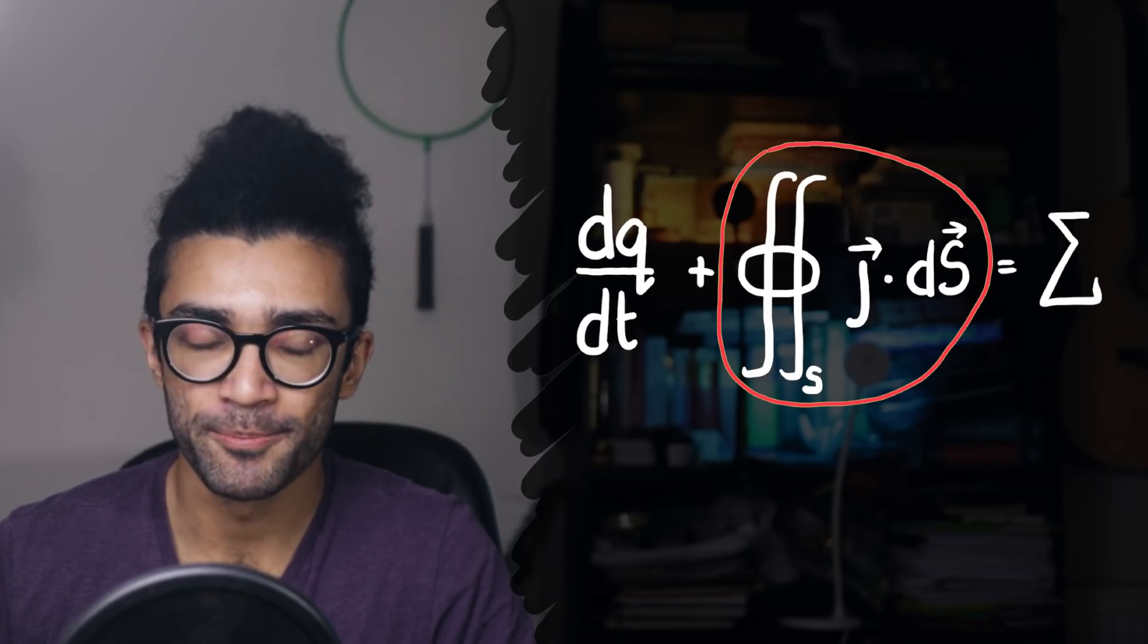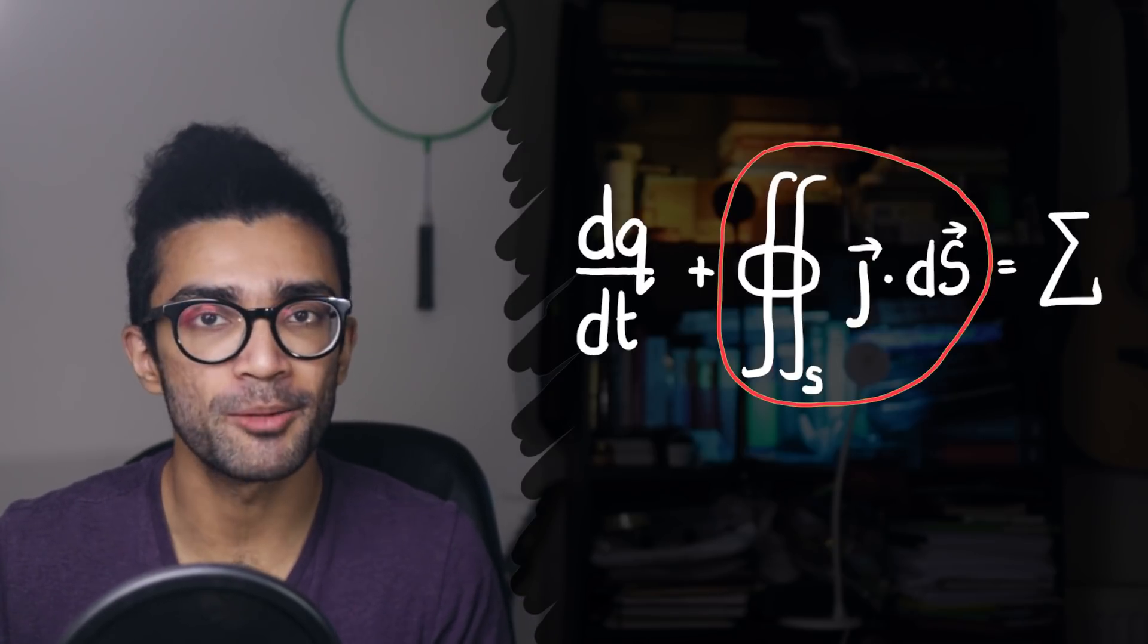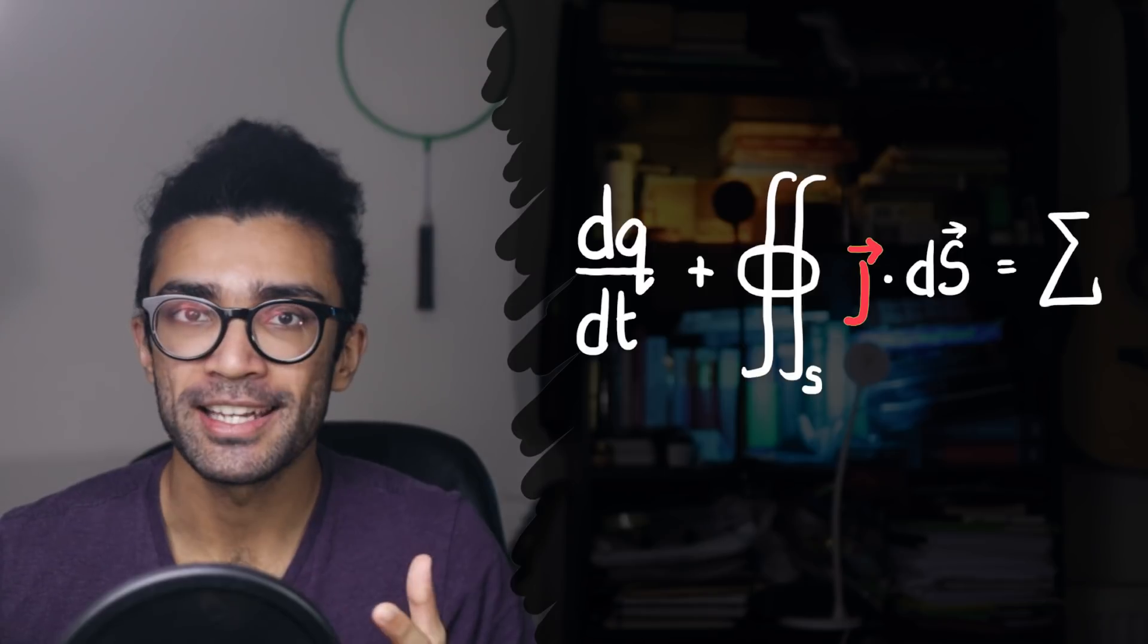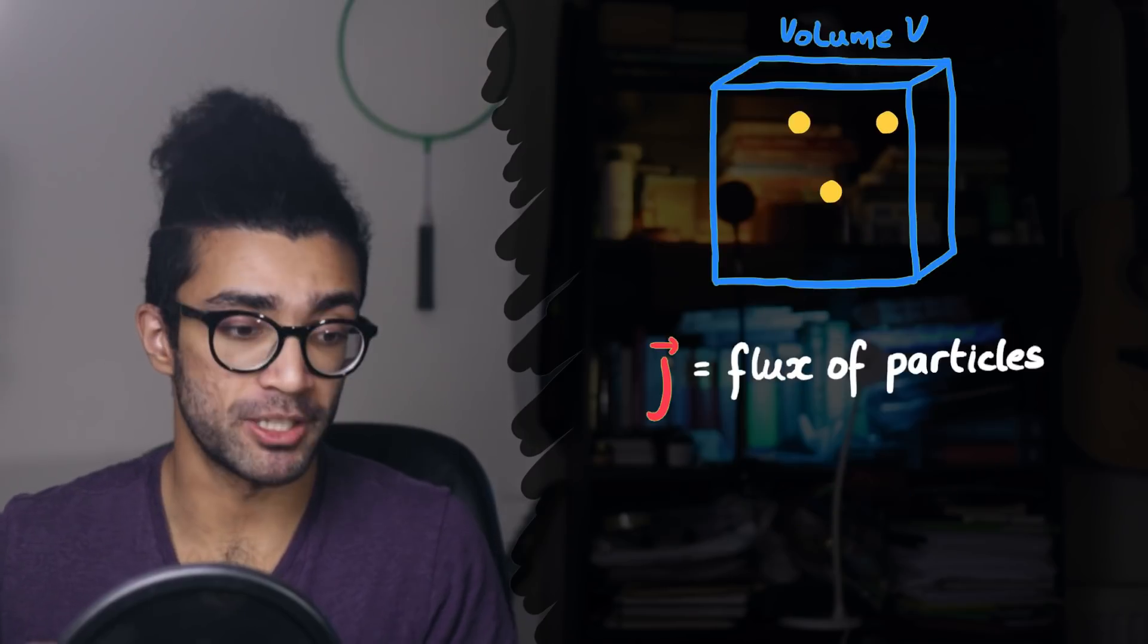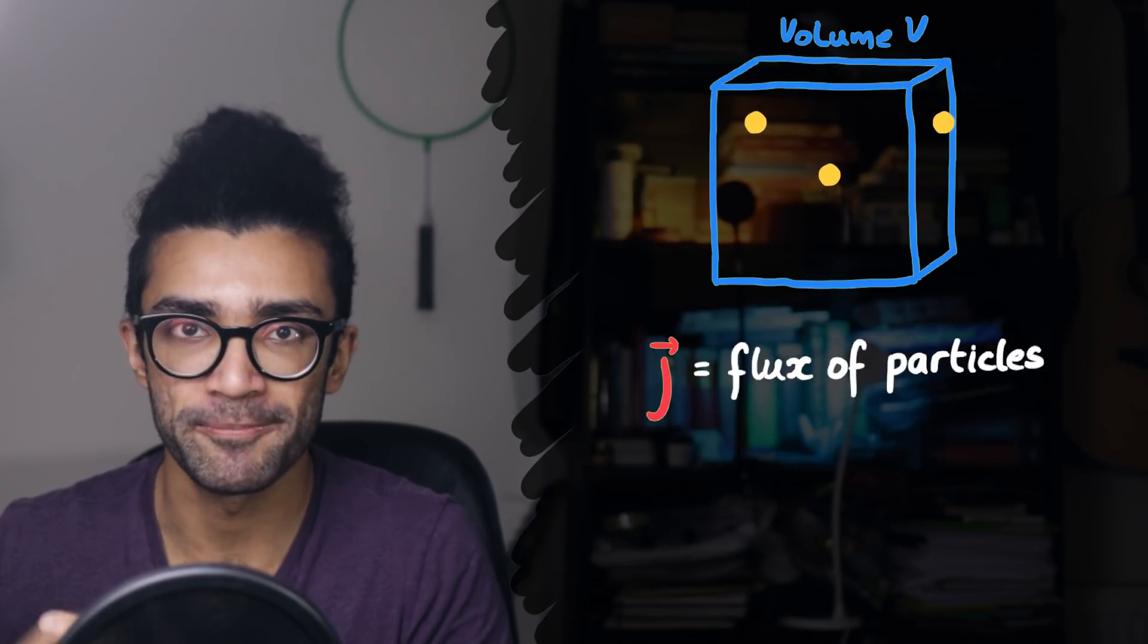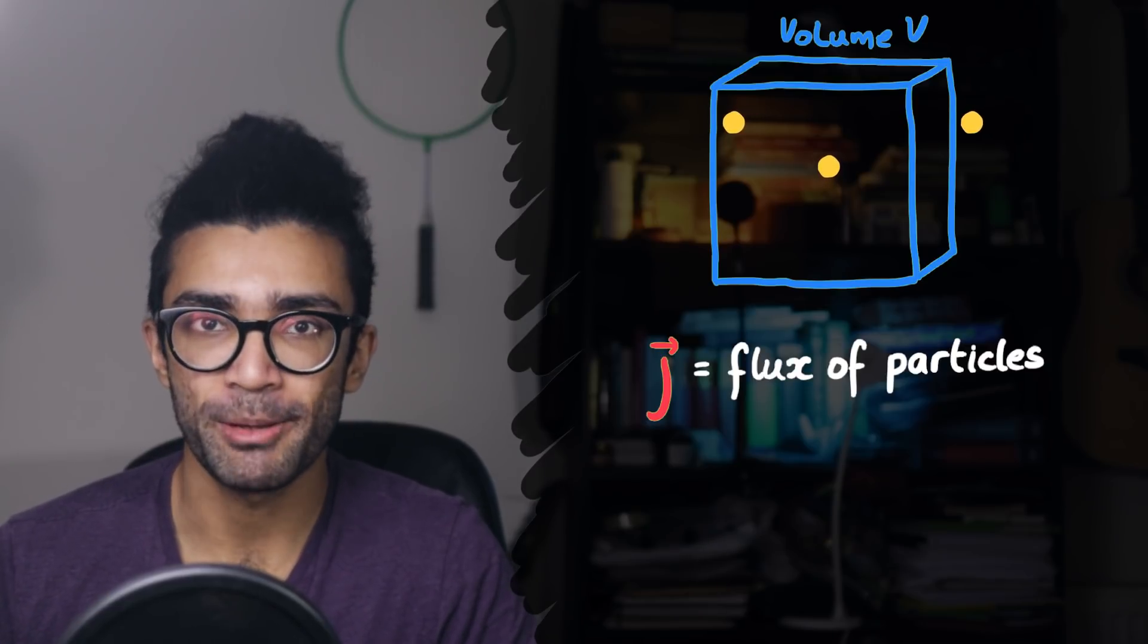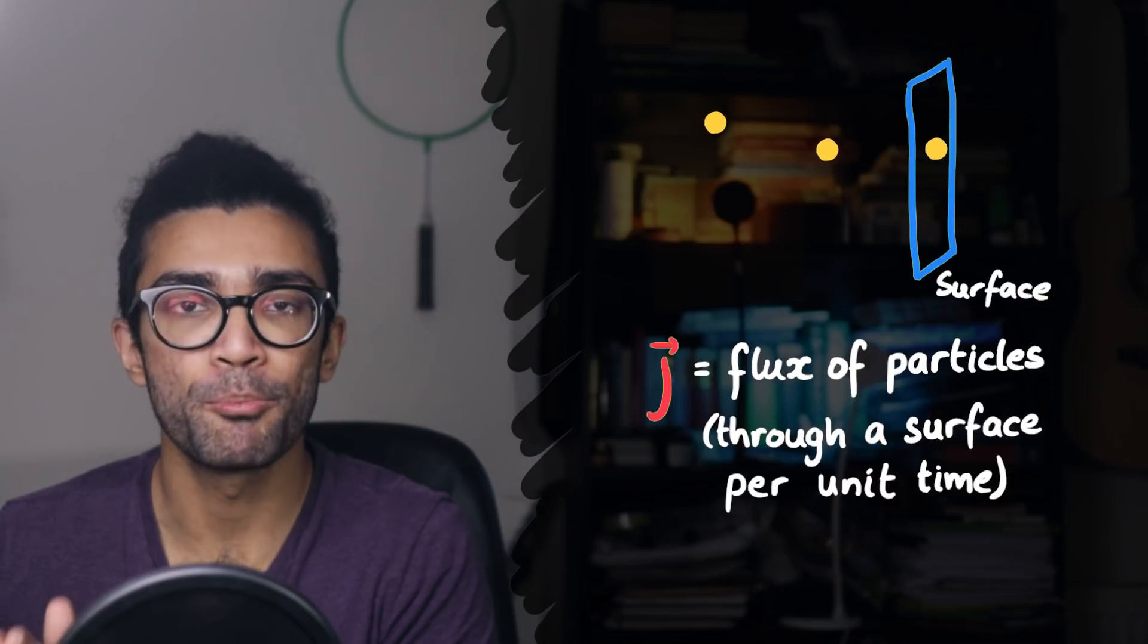Let's move on to the second term then. It looks a little bit more intense, but let's work through it bit by bit. Let's start by looking at J. J is known as the flux of the quantity that we're studying. In the previous example, we were studying the number of particles, so J is the flux of particles. What does that mean? The flux of these particles basically measures how many particles are crossing a particular surface per unit time.